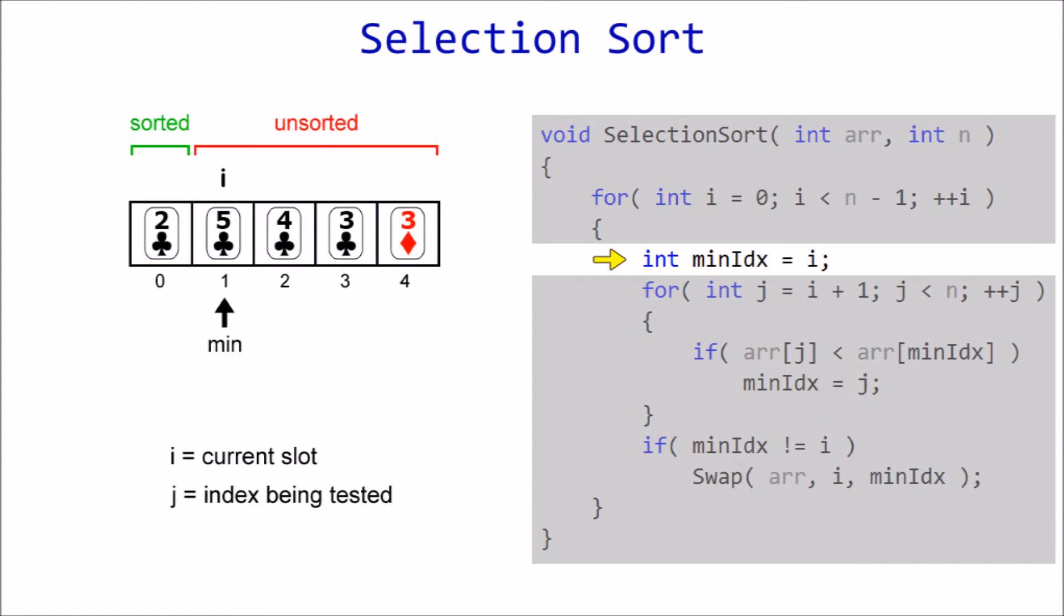This time starting from index one. With five as our new default minimum, we step back into the inner loop and start comparing. Is four less than five? Yes, so we set min index to two. Is three less than four? Yes, so it's updated again to index three.